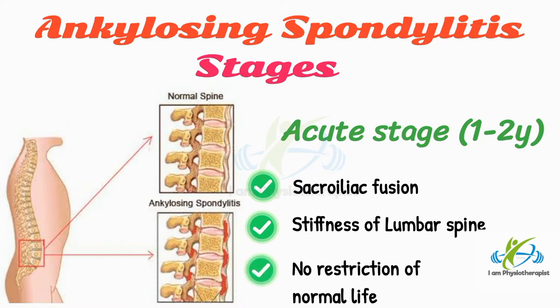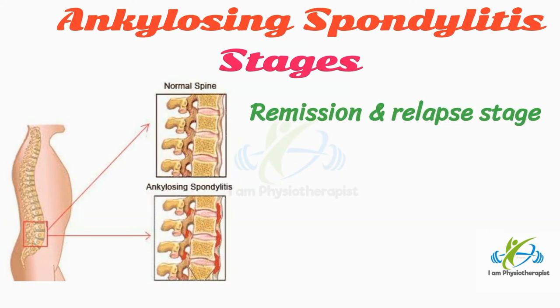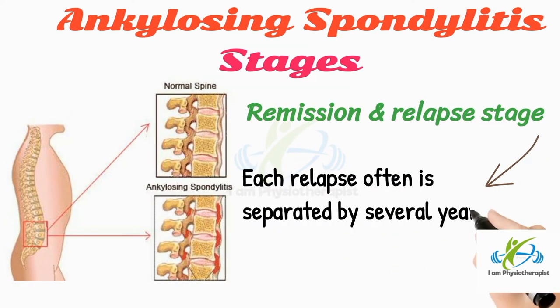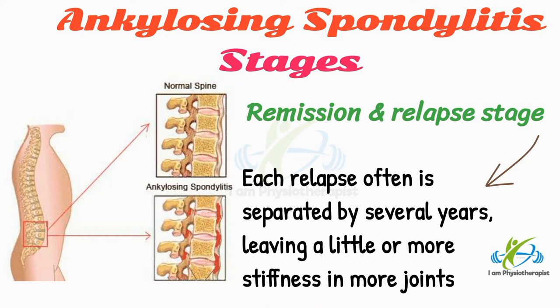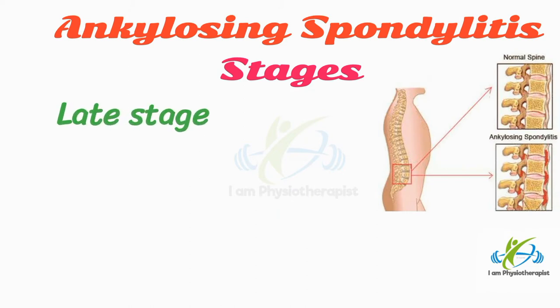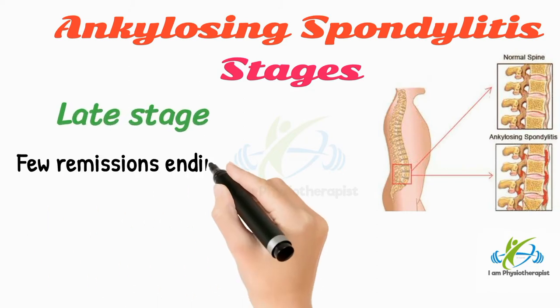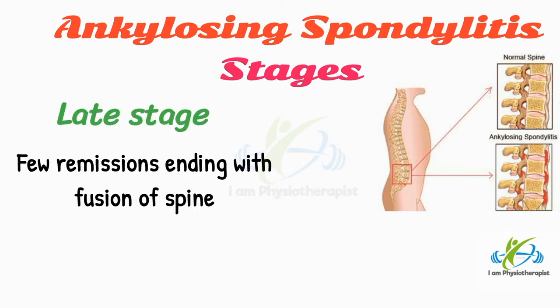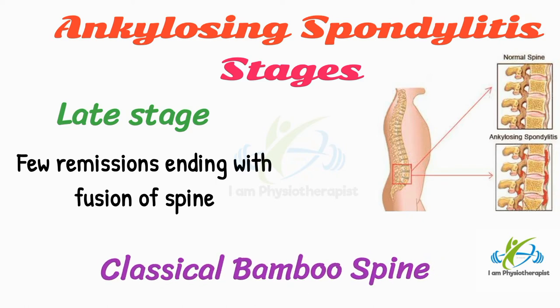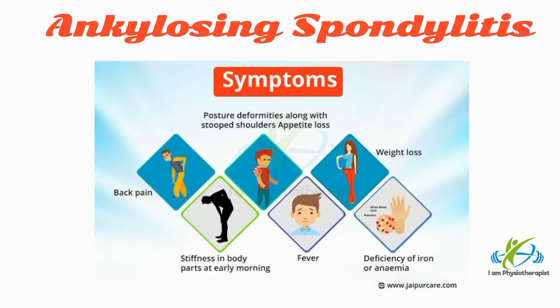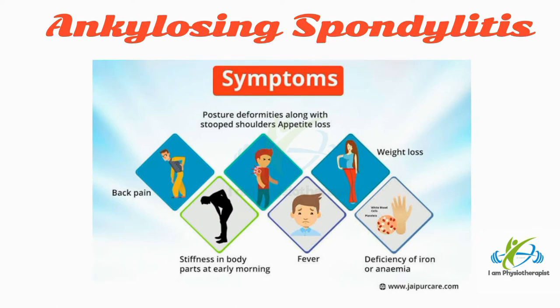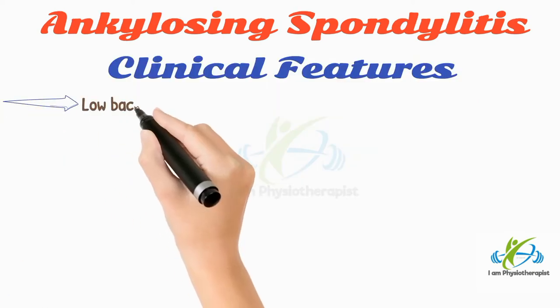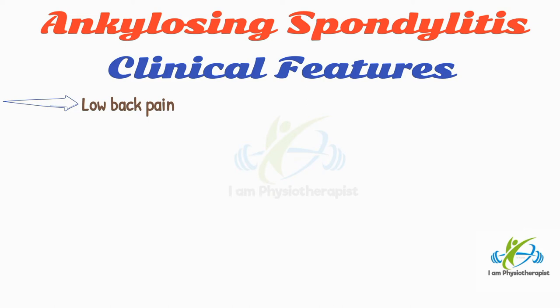Stages of the disease: In the acute stage, it involves sacroiliac fusion and variable stiffness of the lumbar spine with no restriction of normal life. The second is the remission and relapse stage, where each relapse is often separated by intervals leaving a little or more stiffness in more joints. The third is the late stage, with few remissions ending with fusion of the spine leading to the classical bamboo spine.